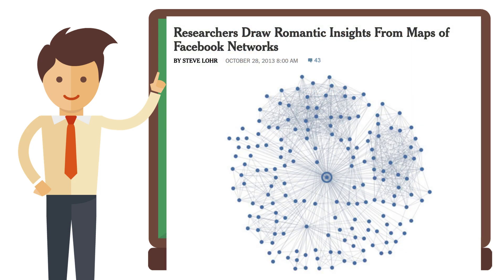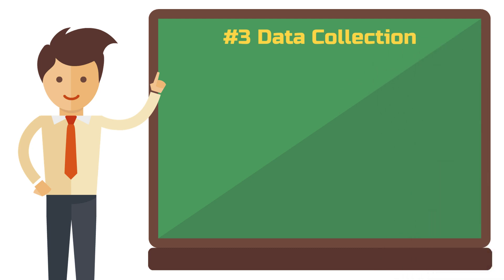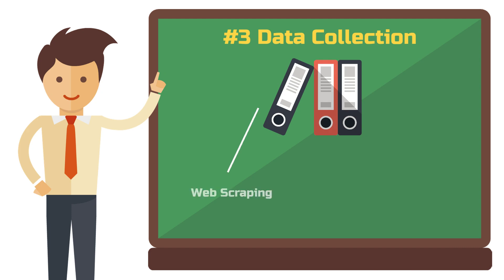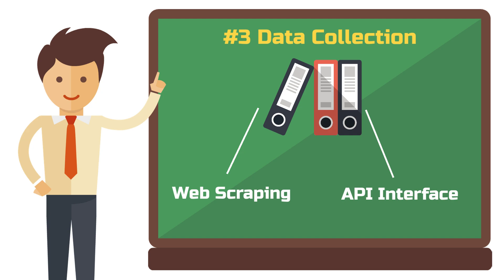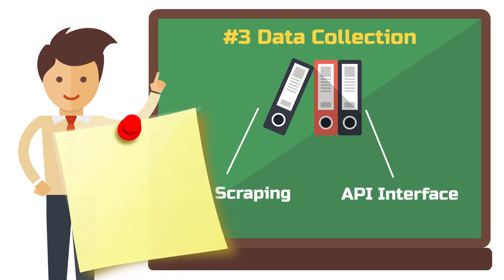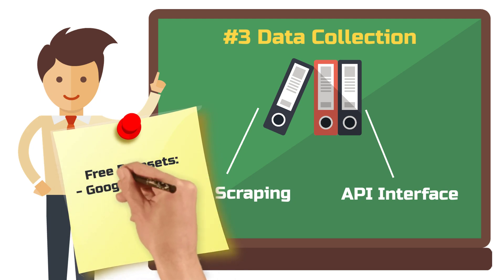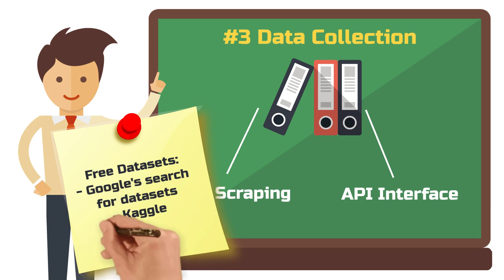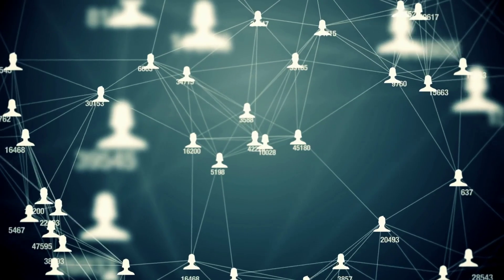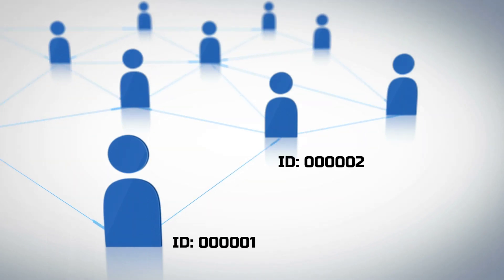Here's an example from the New York Times about romantic insights one can draw from Facebook maps. The basis for conducting any social network analysis is data. In most cases, this data is obtained through web scraping or an API, for example of a social media platform. If you just want to practice, there are plenty of datasets available online for free. You can try Google's search for datasets, the platform Kaggle or data.gov. Data doesn't always have to be collected automatically — it's also possible to create small networks by manually entering your data into an Excel spreadsheet. For a social network analysis, it is important that the data points reference each other, for example using an ID for each node that is referenced in any other node that has a connection to that node. Only then can you calculate centrality measures and visualize a network with software.